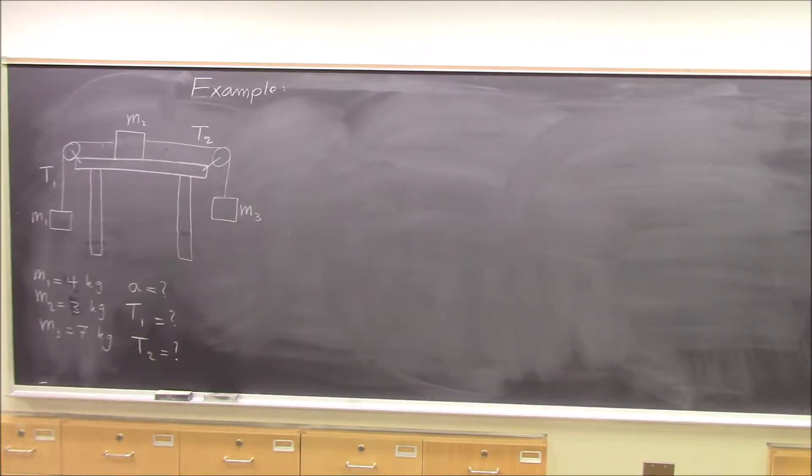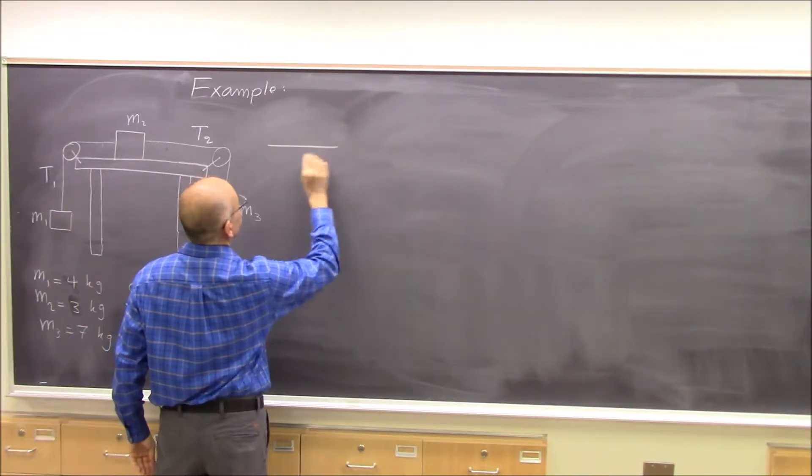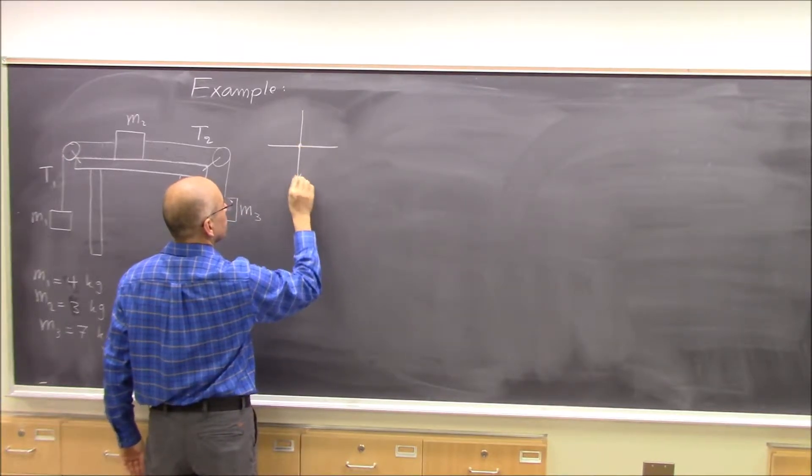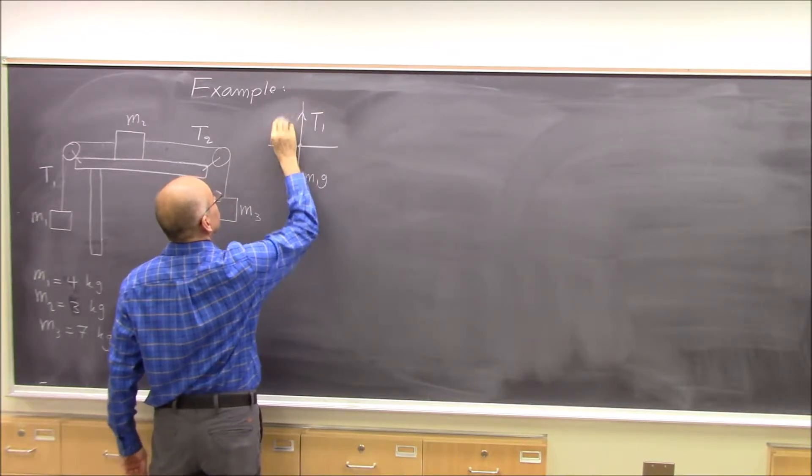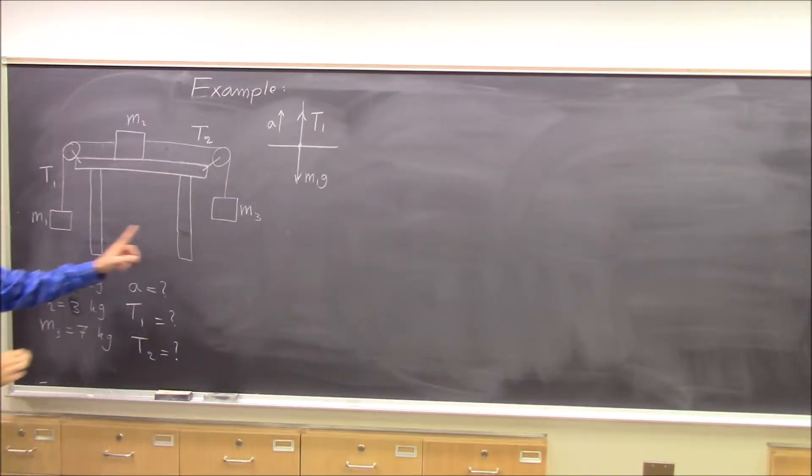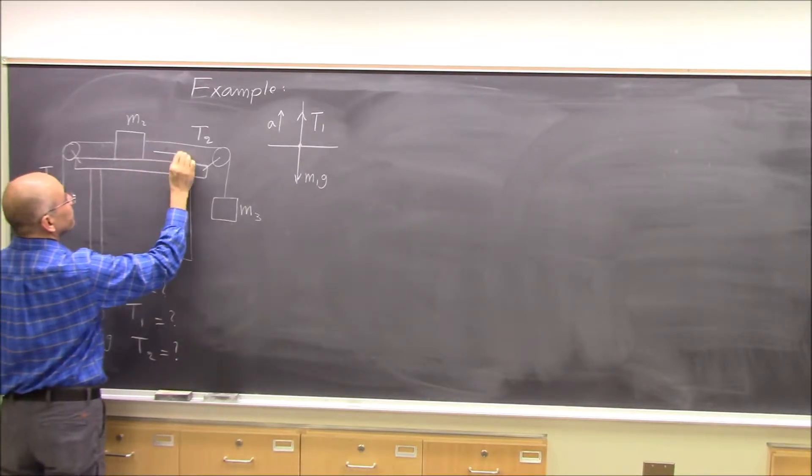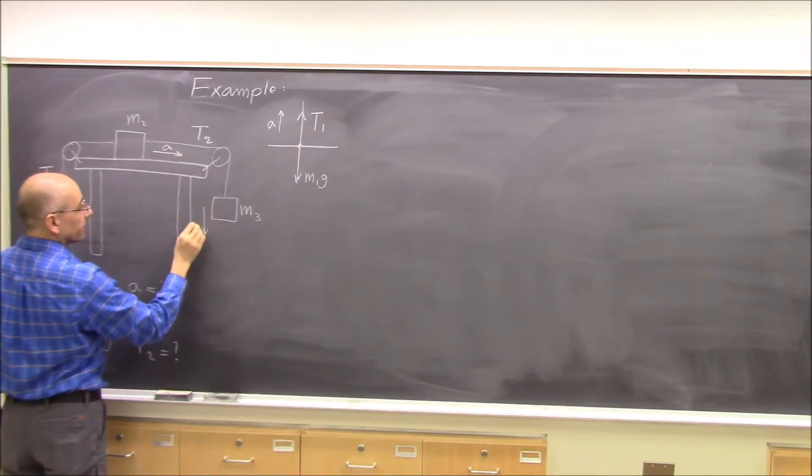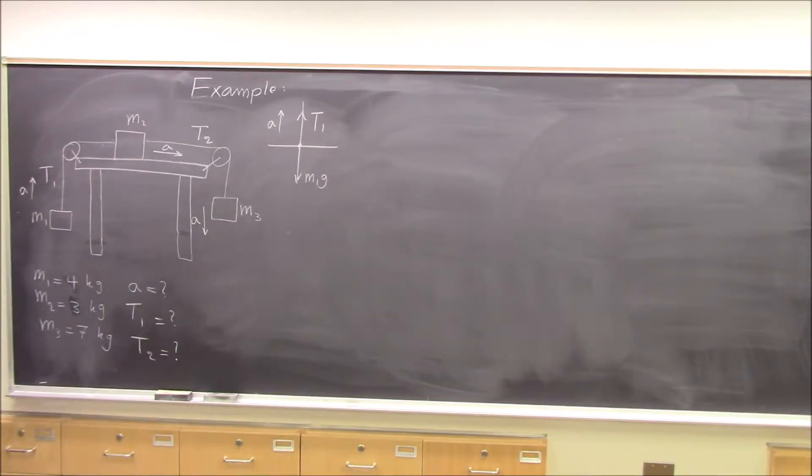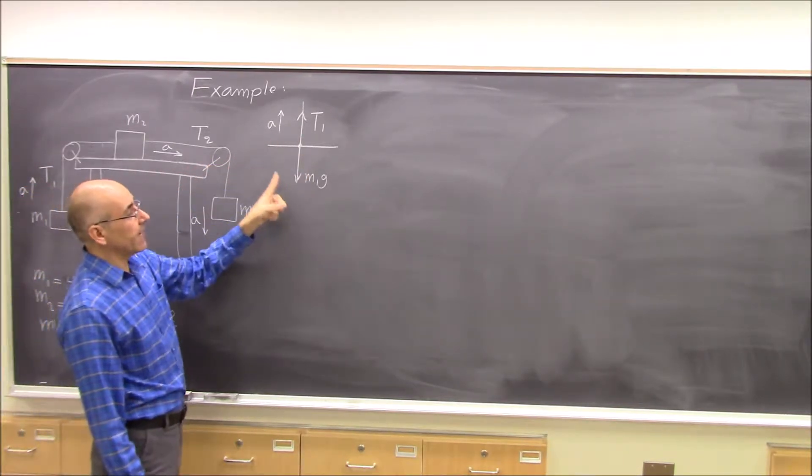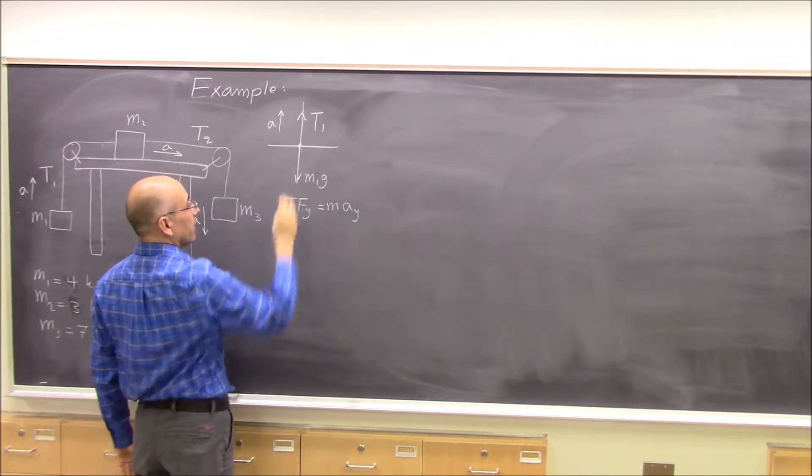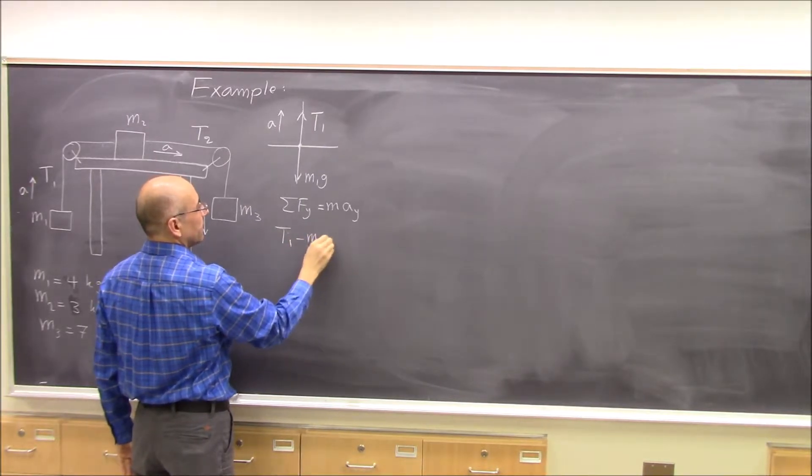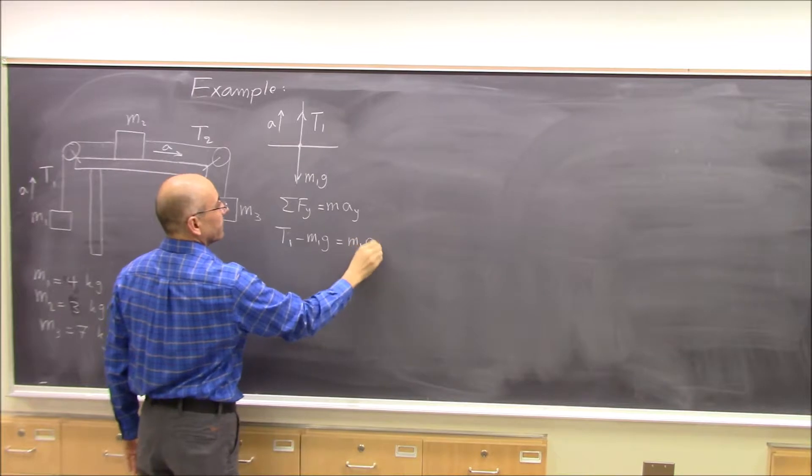We consider each one of the masses one by one. For m1 we have m1g and t1 and it's accelerating up. Because m1 is lighter than m3, this one accelerates up, this m2 accelerates to the right and m3 accelerates down. So this is free body diagram for m1. Writing sum of fy equal to m1a gives us t1 minus m1g equals m1a.